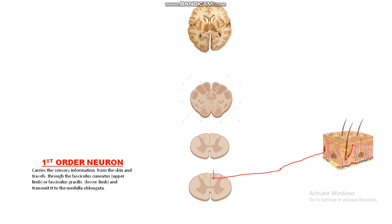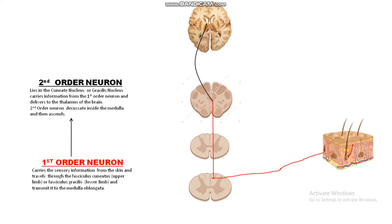The first-order neuron ascends inside the spinal cord and transmits signals to the medulla oblongata, where the second-order neuron lies. The second-order neuron lies in the cuneate nucleus or gracilis nucleus. If the sensory information is coming from the upper limb, the first-order neuron synapses in the cuneate nucleus. If the sensory information is coming from the lower limb, the first-order neuron synapses at the gracilis nucleus. Here, we are showing sensory information from the lower limb, so the first-order neuron synapses at the gracilis nucleus in the medulla oblongata.